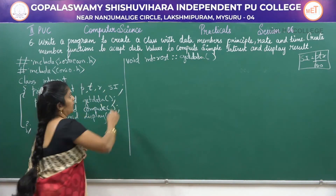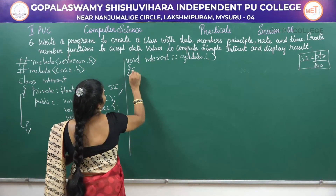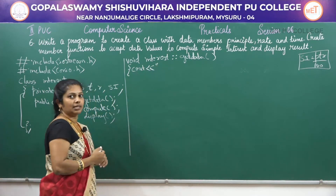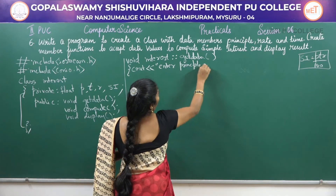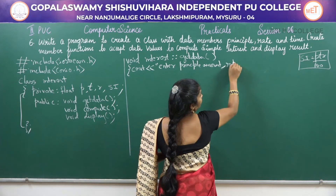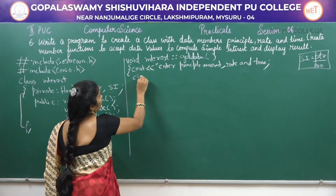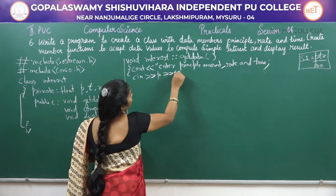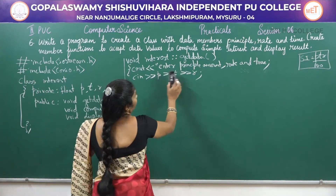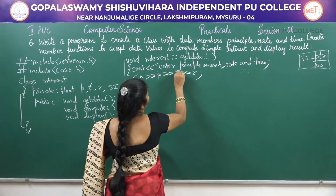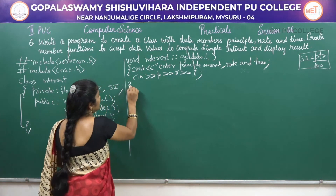Inside the getdata function, we display a prompt using cout with the message 'enter principal amount, rate, and time'. To input the values one by one, use cin with the extraction operator: cin >> P >> R. Then we input principal amount, rate, and time. Once all inputs are taken, close this function.